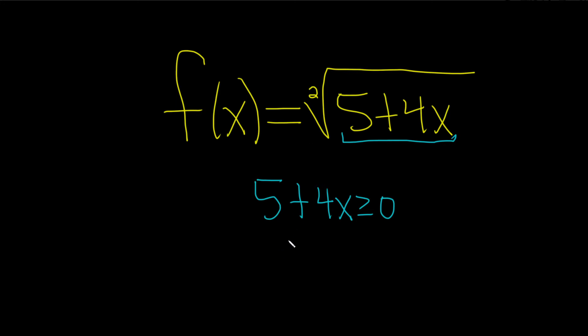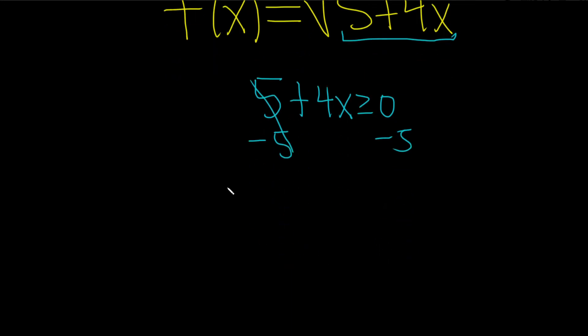Then we just have to solve this for x. So we'll subtract 5, subtract 5. That gives us 4x greater than or equal to negative 5.